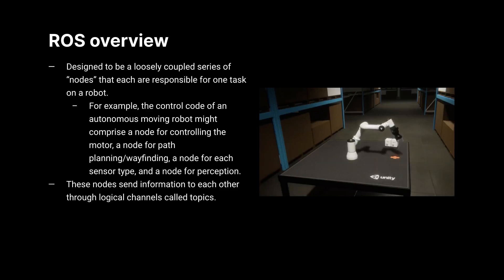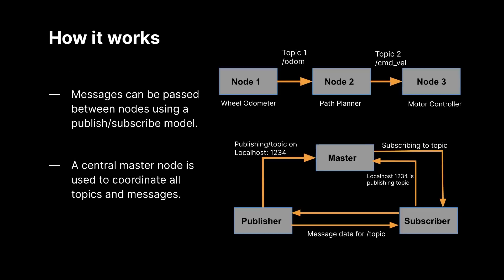Just a quick overview: ROS is basically a collection of nodes, each dedicated to a single process or function, and communication between those nodes is done by queues, which they refer to as topics. Messages are passed between nodes through topics. A node can subscribe to a topic to read messages or publish to a topic to write messages. The top of the slide shows a simple example of how data might flow between nodes and impact robot behavior — going from a wheel odometer reading to a path planner and finally to a motor controller. There is one master node that helps facilitate node discovery and communication between nodes.